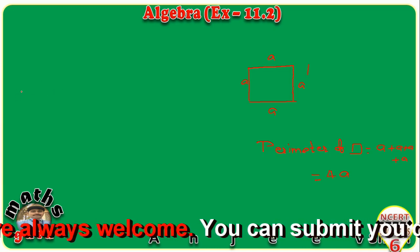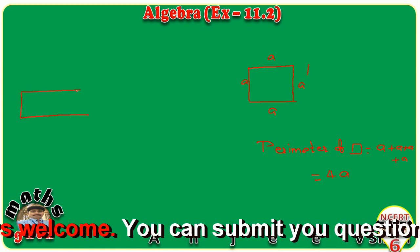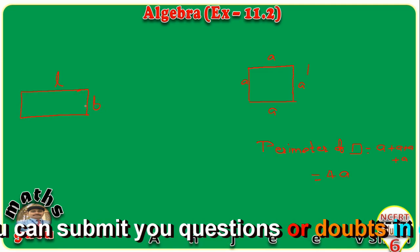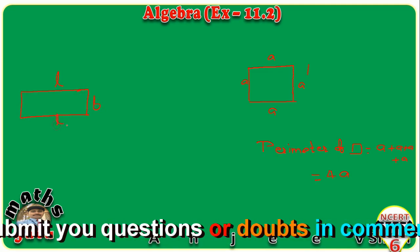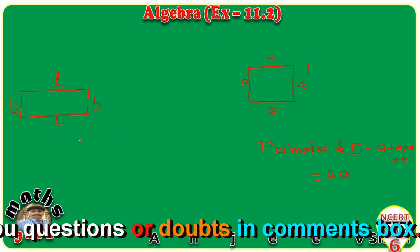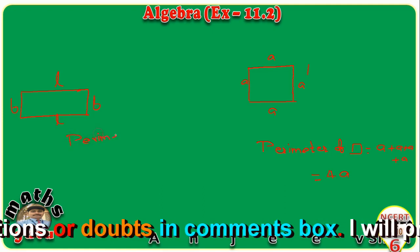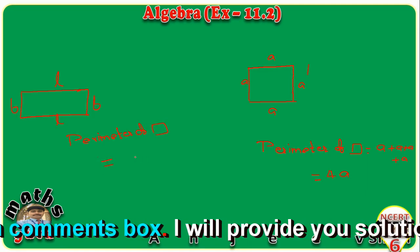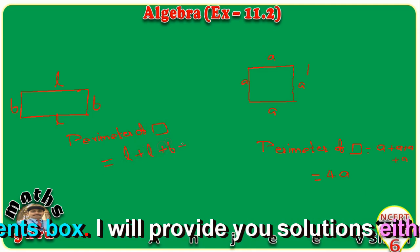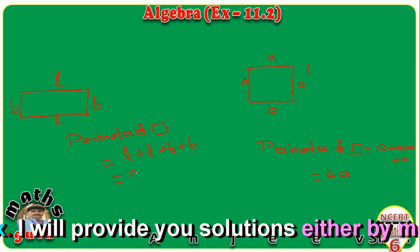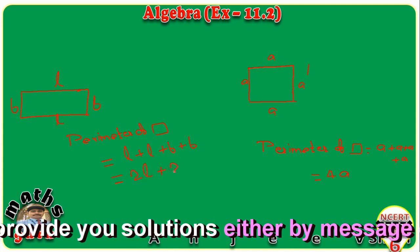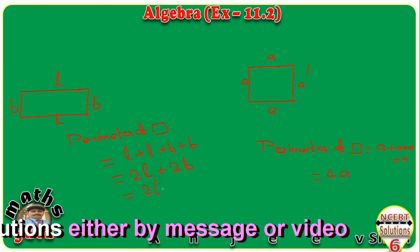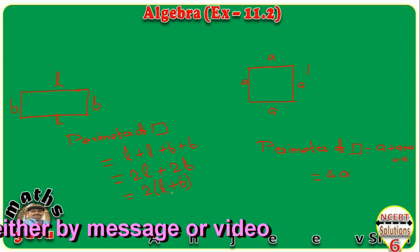Now if we have a rectangle, with length L and breadth B, the rectangle has 4 sides total. To find the perimeter of a rectangle, we add all sides: L plus L plus B plus B. That gives us 2L and 2B. So we can write this as 2 multiplied by (L plus B). That is our equation for the perimeter of a rectangle.